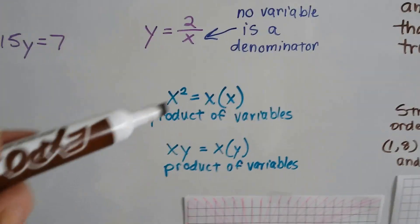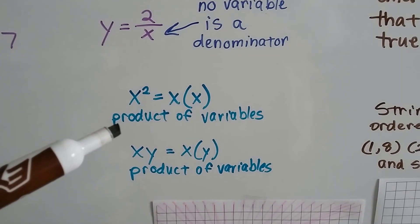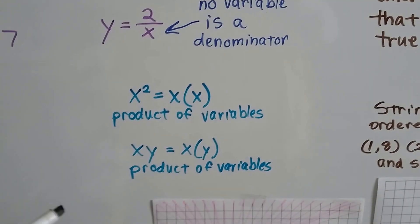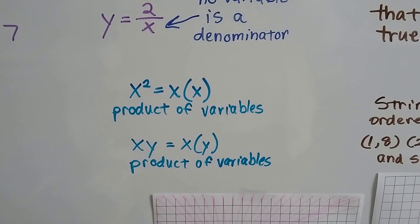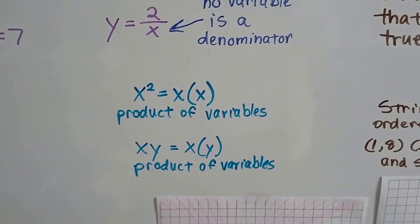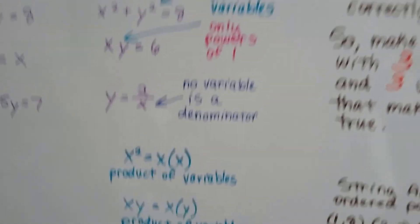So remember, when you've got an exponent of 2 or more, or even a negative exponent, that's a product of variables. And when the variables are next to each other, that means you multiply them and that's a product of variables. Negative exponents mean fractions.